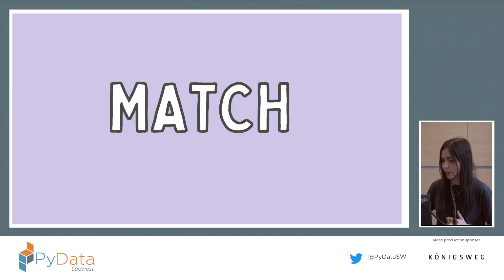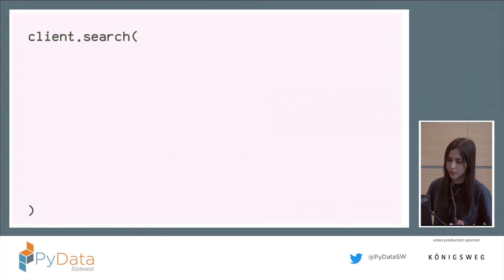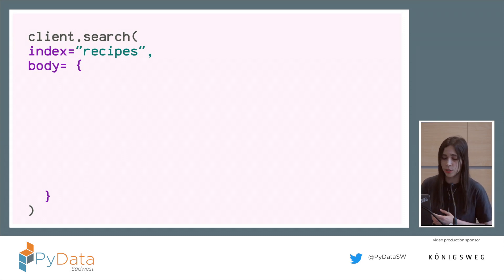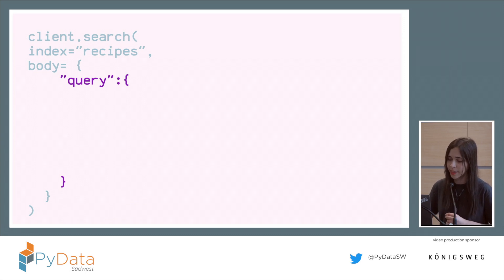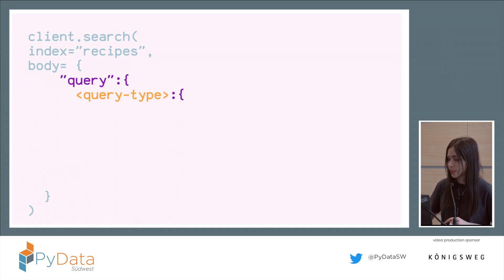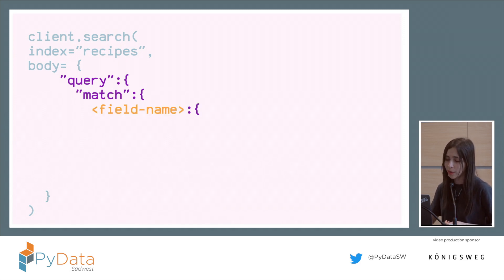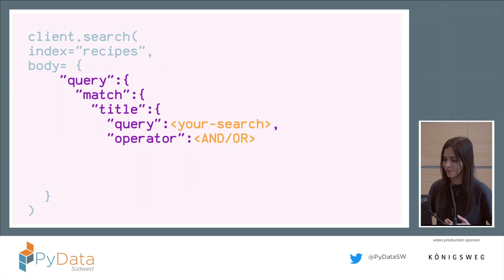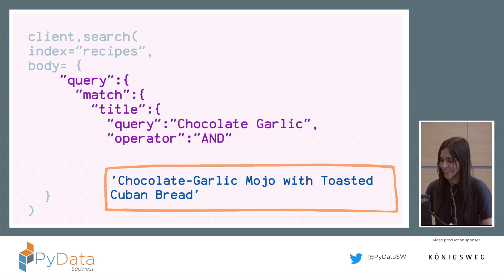Let me show you how the syntax works in Python. First, I create the client. I use the dot-search method to build the query and give it the index where I indexed my data beforehand. The query is a dictionary with the keyword 'query', then the query type — in this case 'match'. I give the field name and the search words, and optionally the operator. Without an operator, it defaults to OR.